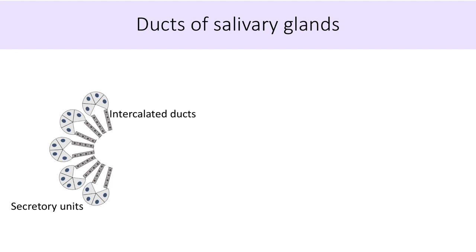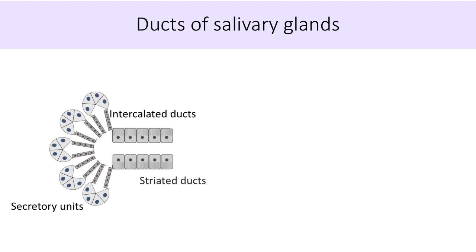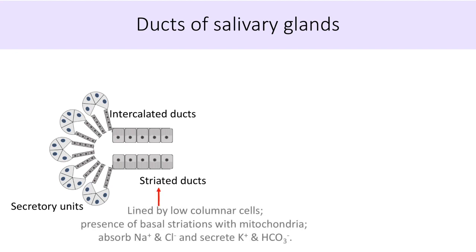They show carbonic anhydrase activity and secrete bicarbonate ions into the duct while absorbing chloride from it. Striated ducts, on the contrary, are lined by low columnar cells. They are called striated ducts because the cells lining them show basal striations due to infoldings of the basal plasma membrane, and they also have elongated mitochondria in the basal region. Both the basal infoldings and elongated mitochondria are required for absorbing sodium and chloride ions from the salivary secretion and secreting potassium and bicarbonate ions into it. These basal striations and elongated mitochondria displace the nucleus to a more central position within these cells.